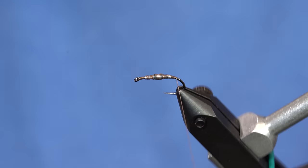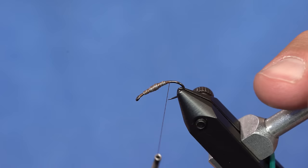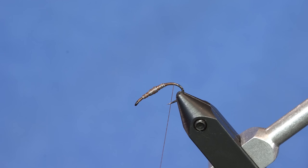So that's our scud underbody. To make it easier to work with down on the curve, I'm going to put the hook down in my vise a little bit. Totally unnecessary, but I find that it helps.